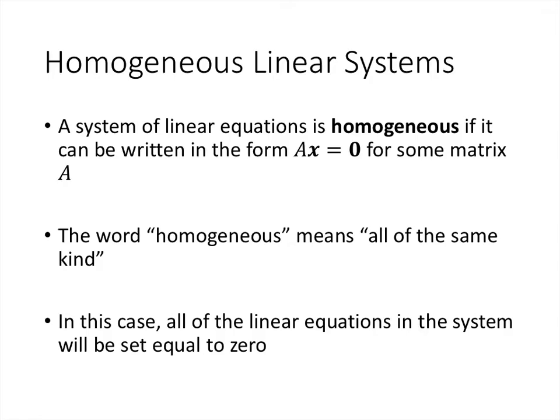So what does it mean for a system of linear equations to be homogeneous? All that means is that it can be written in the form Ax = 0 for some matrix A. Remember, we know that every linear system can be written in the form Ax = b, and so this just means that the b vector is the zero vector. The word homogeneous here just means all of the same kind, and so what that's trying to describe here is that all of the equations of our linear system are going to have a zero on the right-hand side.